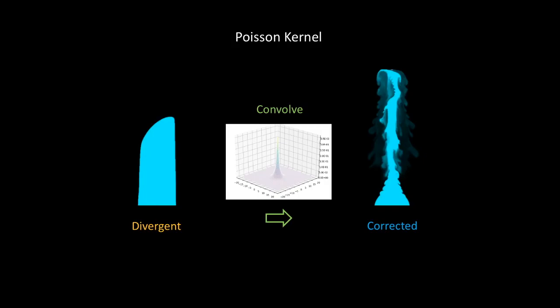Now, having that kernel, we can convolve the divergence to get the pressure we need for the projection step. That's good. There is a problem though. The full kernel is a dense matrix that is expensive, especially for a high number of iterations.